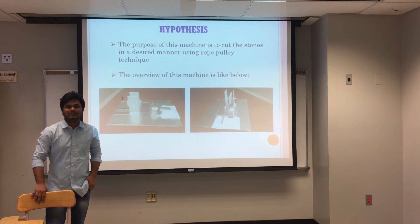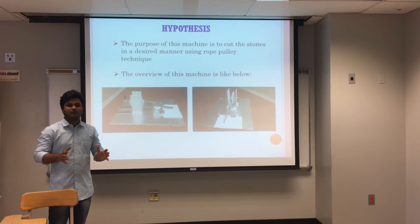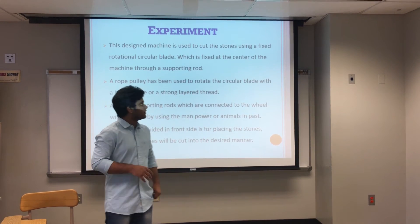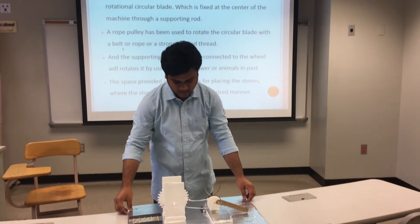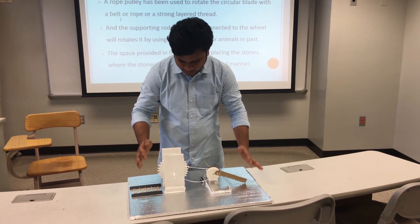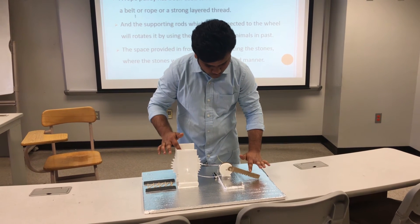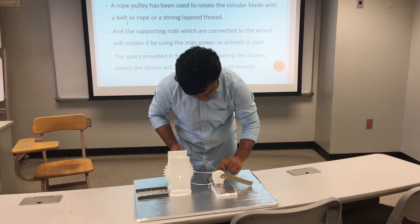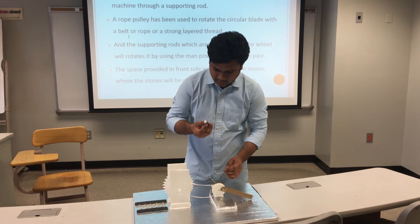Hypothesis: the main purpose of this project is to design an ancient machine which was used in the past for cutting stones in our desired manner. Here you can see the overview of this project. Coming to the experiment, here you can see the working prototype. This is the circular blade and this is the vertical blade. These two blades are designed for cutting the stones on two sides. This is a rope pulley designed for rotating these two blades, and the motor we are using gives energy to the rope pulley.